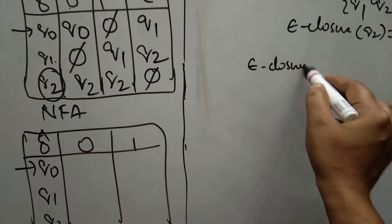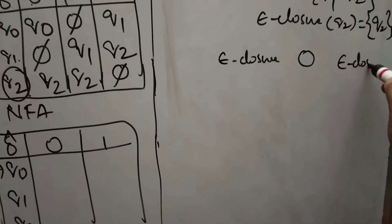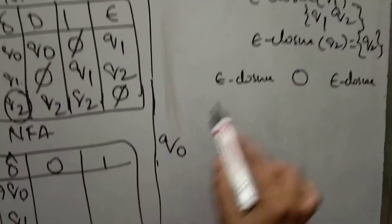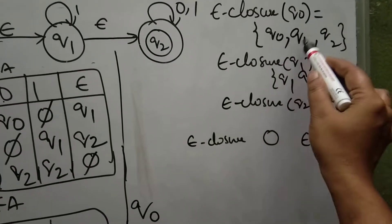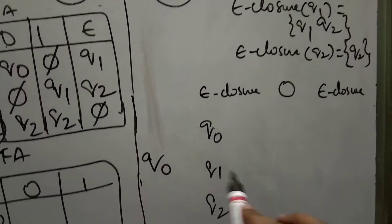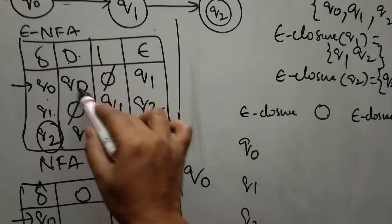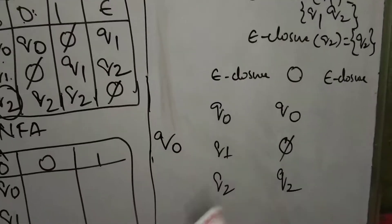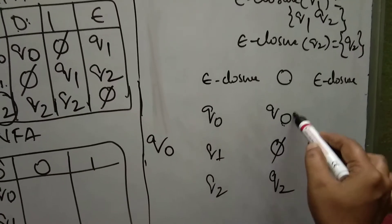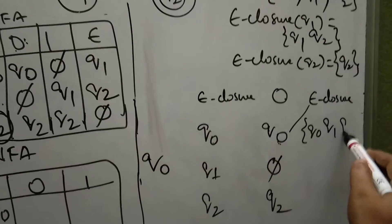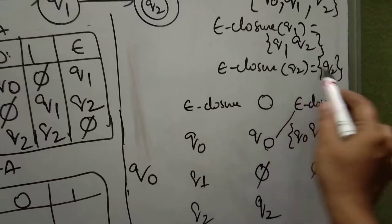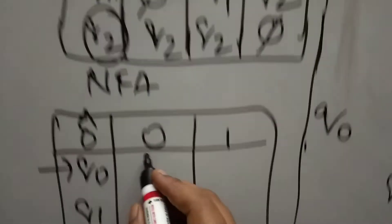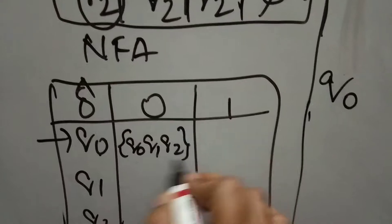To calculate Q0 upon 0, first find epsilon closure of Q0, which is {Q0, Q1, Q2}. Then compute each state upon 0: Q0 upon 0 is Q0, Q1 upon 0 is dead state (phi), Q2 upon 0 is Q2. Now apply epsilon closure: epsilon closure of Q0 is {Q0, Q1, Q2}, epsilon closure of phi is empty, epsilon closure of Q2 is Q2. Combining all, Q0 upon 0 gives {Q0, Q1, Q2}.